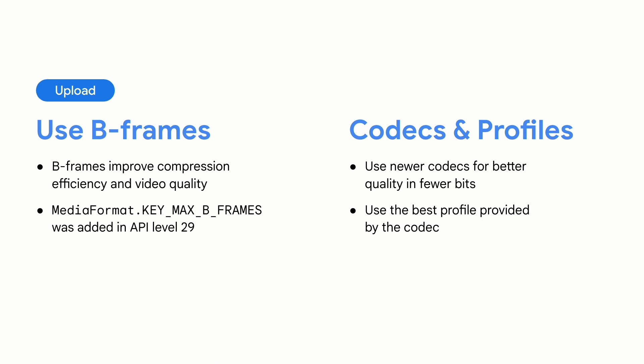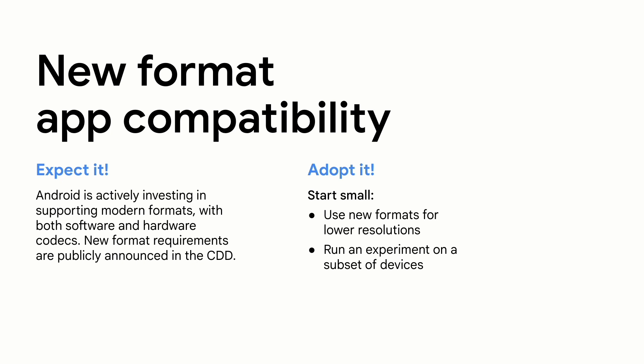For the upload step, you can retain quality by making sure you're compressing the content as efficiently as possible. On Android 10 and up, you should include B-frames in your uploads to improve compression efficiency and video quality. Similarly, aim to use newer codecs whenever and wherever possible to get files that store higher quality content in fewer bits. In addition, use the highest profile possible provided by the codec to take advantage of features such as B-frames. We're investing in supporting modern codecs, both by including and improving software codecs in the platform, and in the longer term by working with device manufacturers to include hardware-based codecs. New format requirements are part of the CDD and generally announced via an Android developer blog post. Especially if you ingest or consume content from shared storage, make sure you have a way to decode new formats.